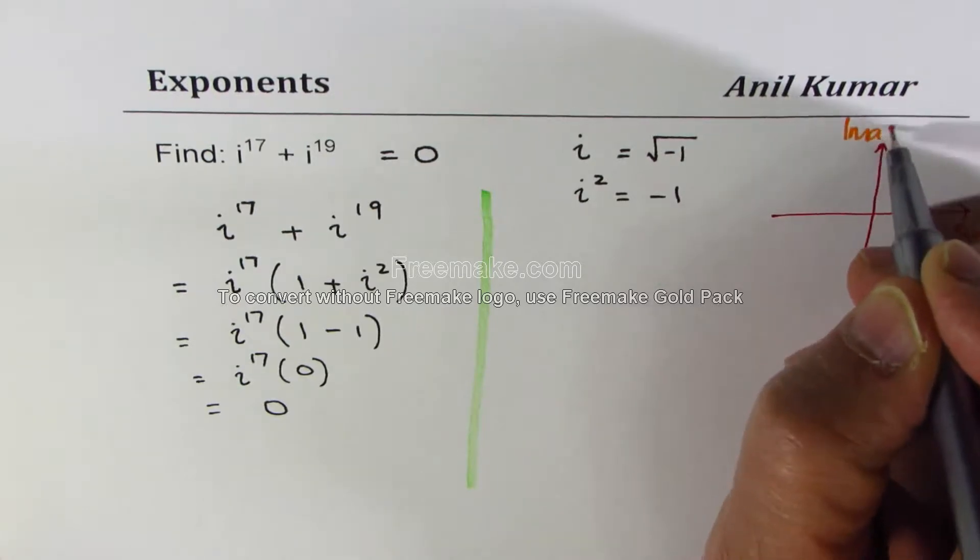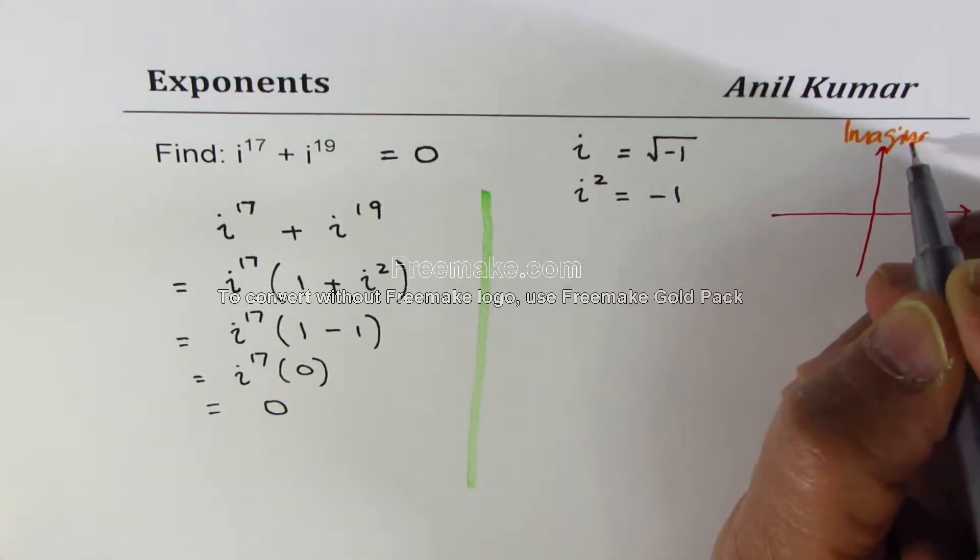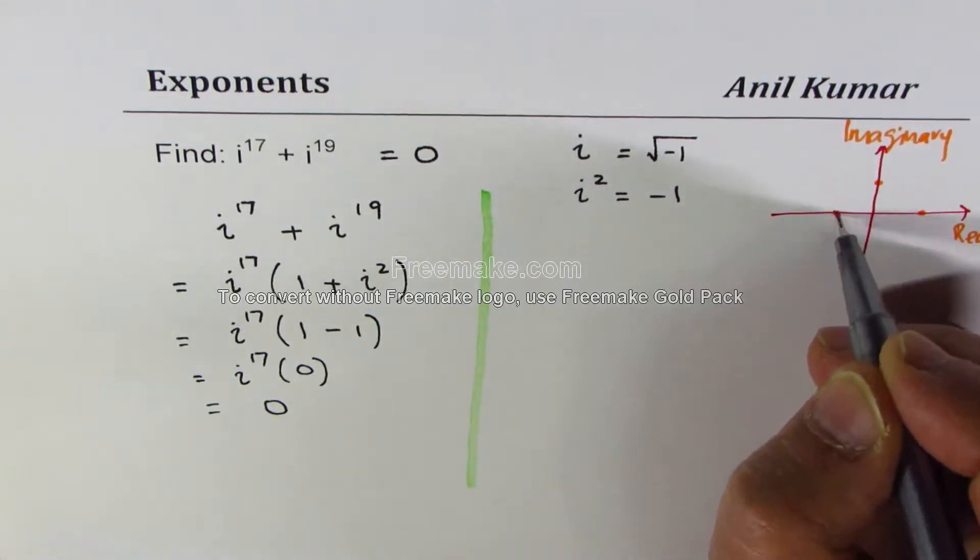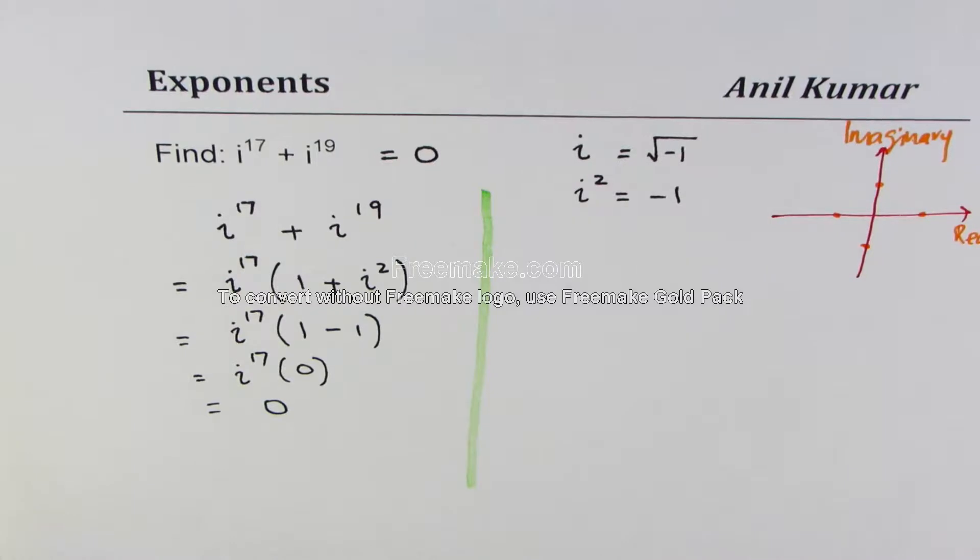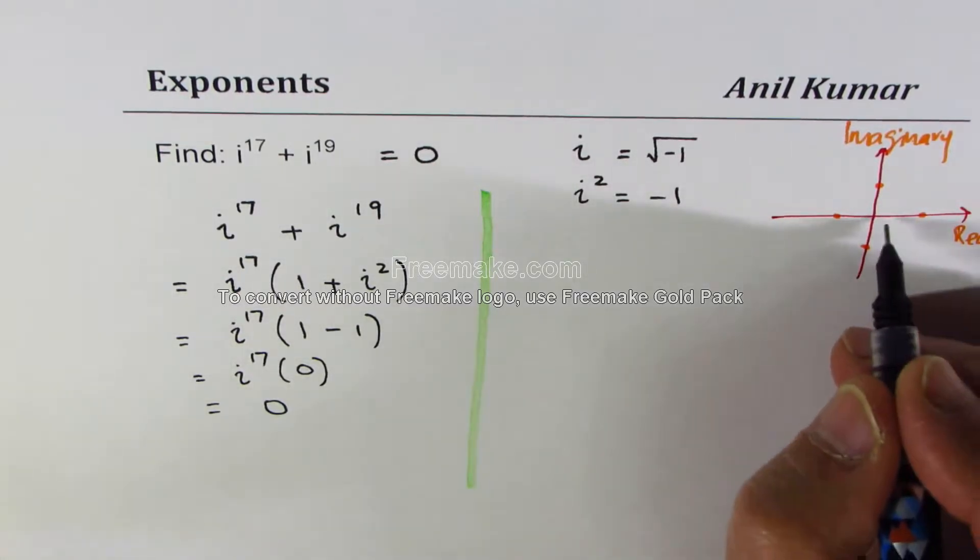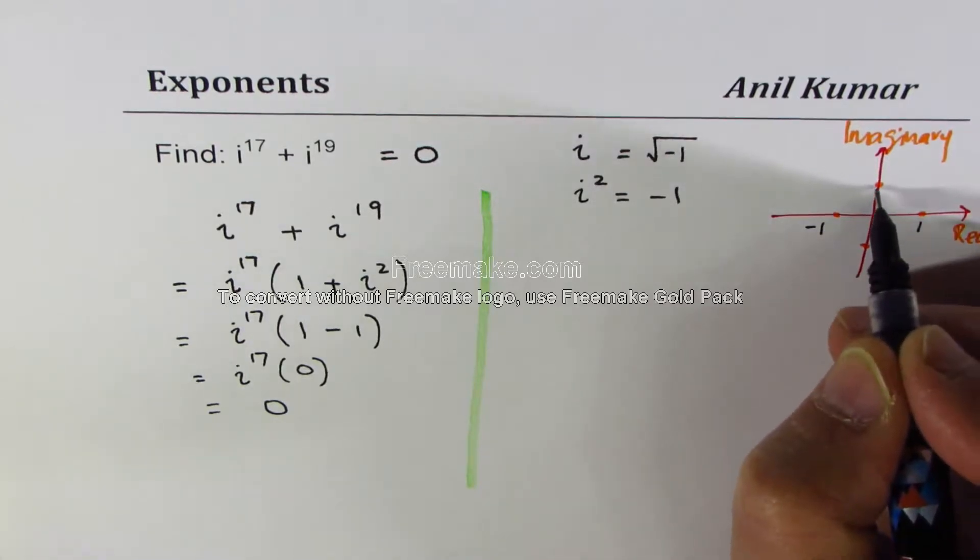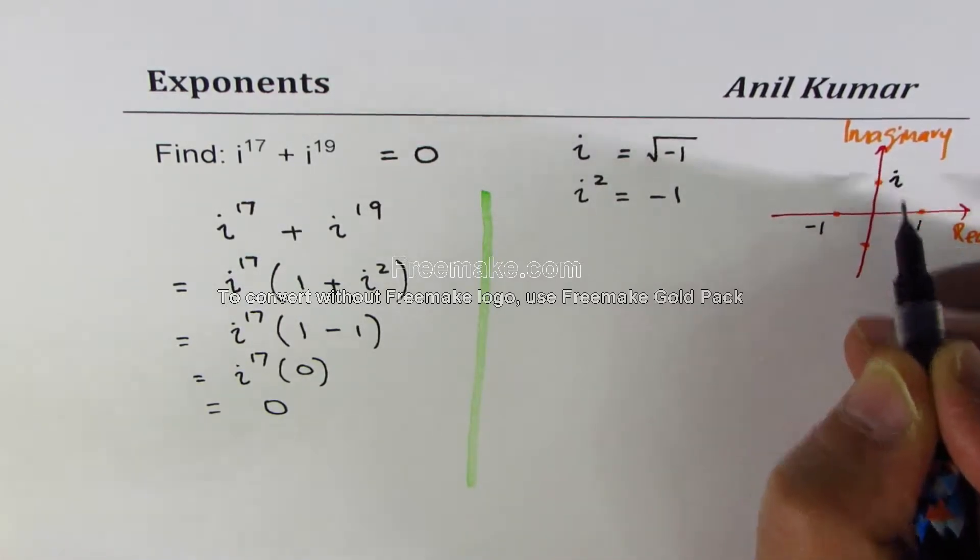So what do you know here is that these points could be represented as well. This is real 1, this is real minus 1, and this is imaginary i and this is minus i.